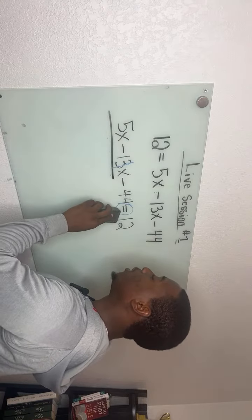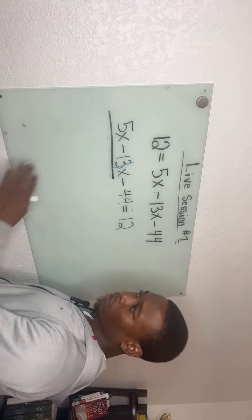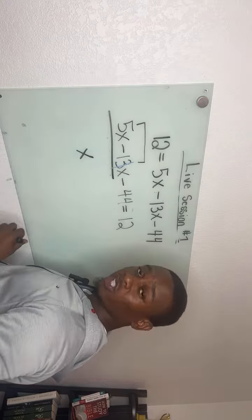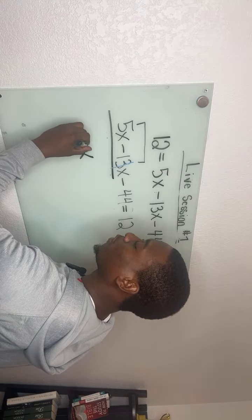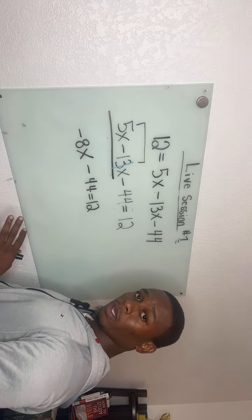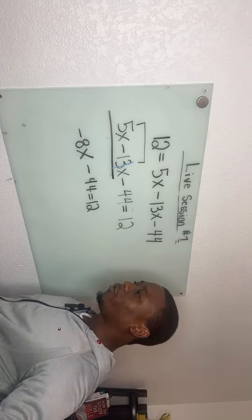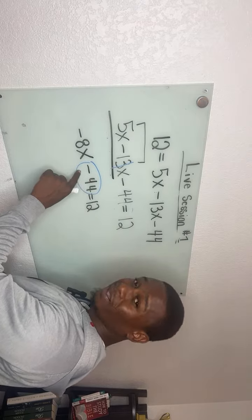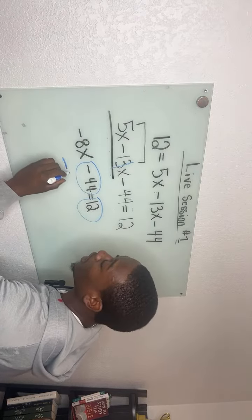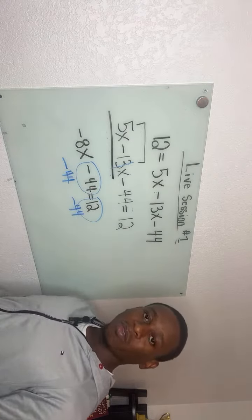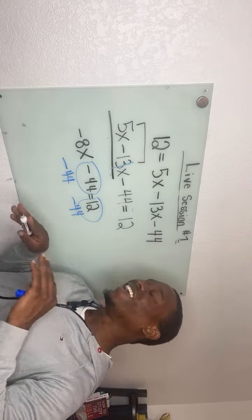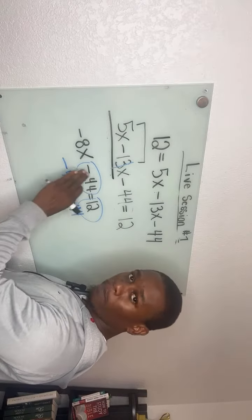So in this problem, don't worry too much about the x — just focus on the coefficients. Five minus 13 gives us negative 8x. We bring down the rest of the problem. The only like terms we have now are negative 44 and 12. Don't forget that 44 is negative — if you forget that, the whole problem changes. You'd end up with negative 44 minus 44, which is negative 88, and that's not what we want.